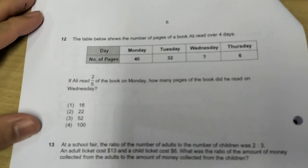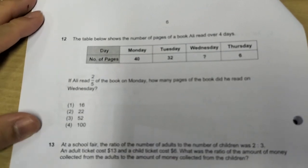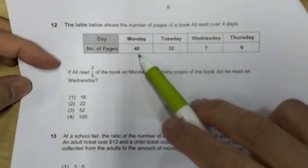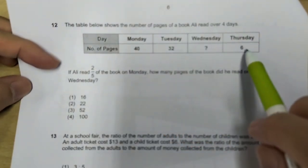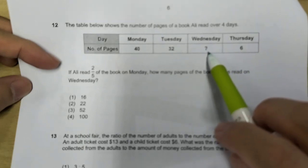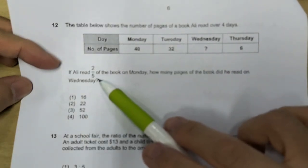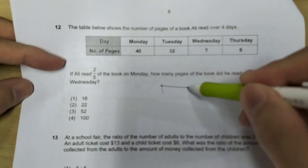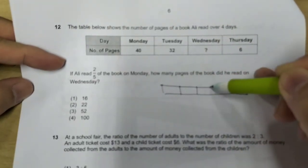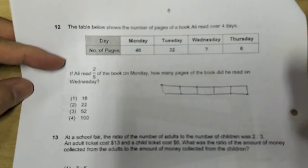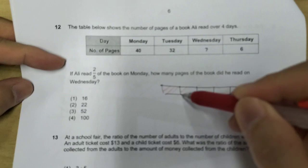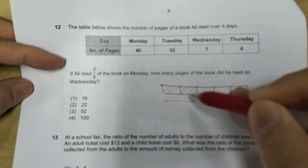Let's look at question 12 now. The table shows the number of pages of a book Ali read over 4 days. So, I know he read 40 on Monday, 32 on Tuesday, 6 on Thursday. I'm not sure how many he read on Wednesday. If two-fifths of the book was read on Monday, how many pages did he read on Wednesday? Let's look at Monday. So, if you draw a model, and divide the number of pages into 5 parts, and they tell us that two-fifths was read on Monday.